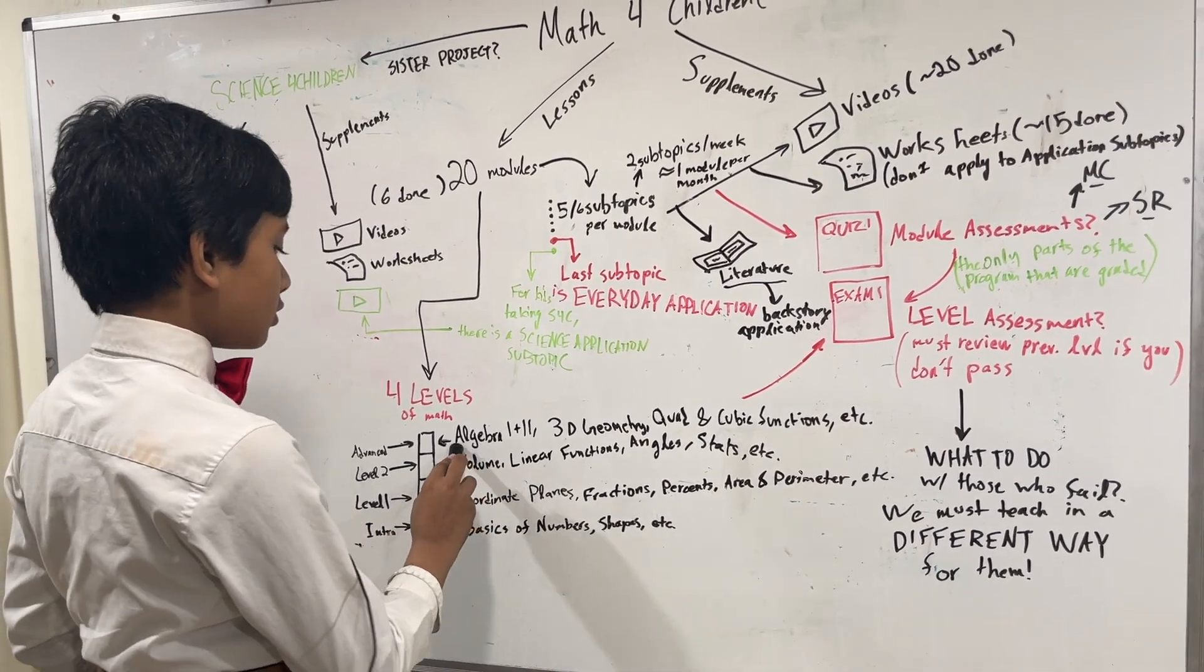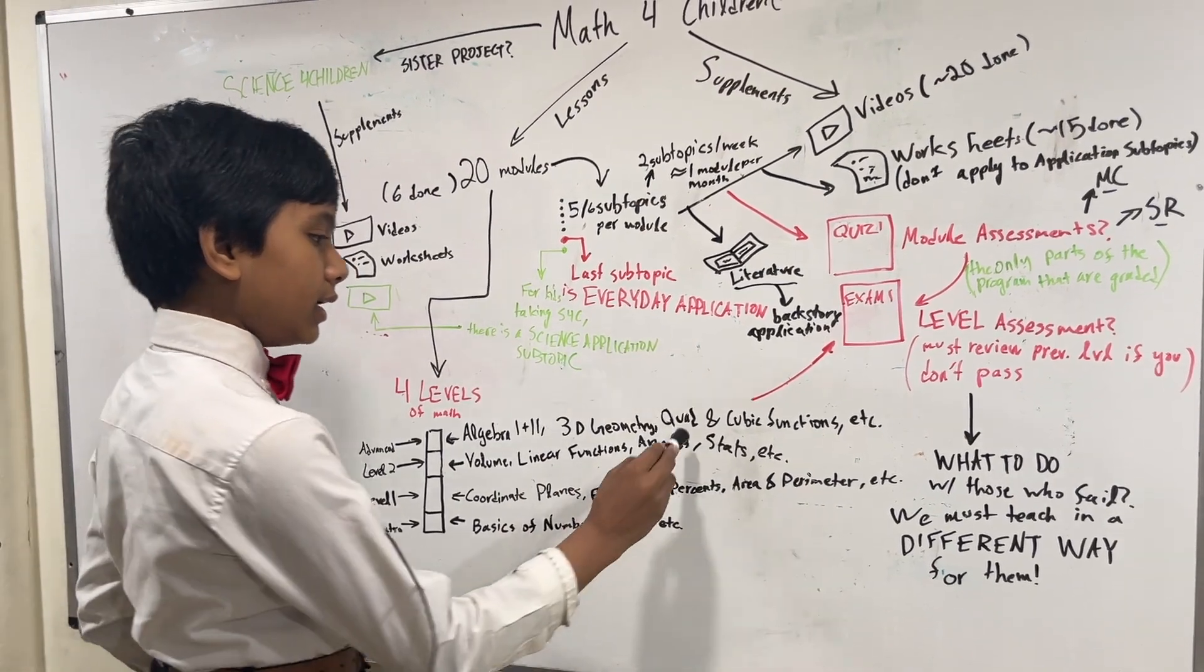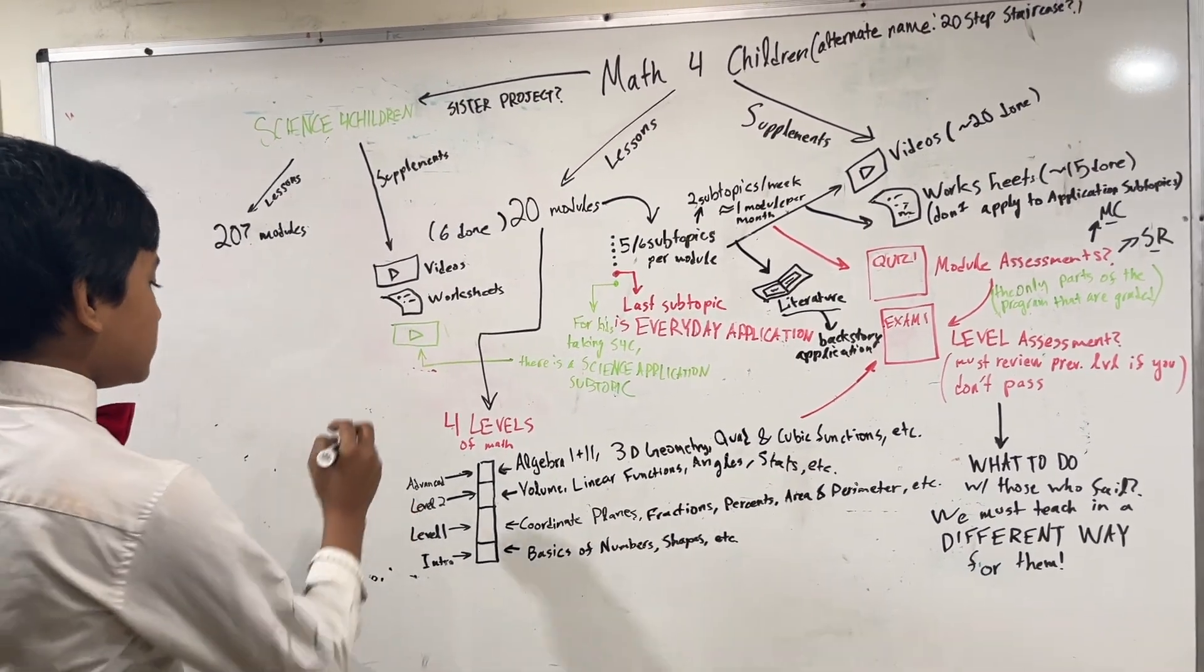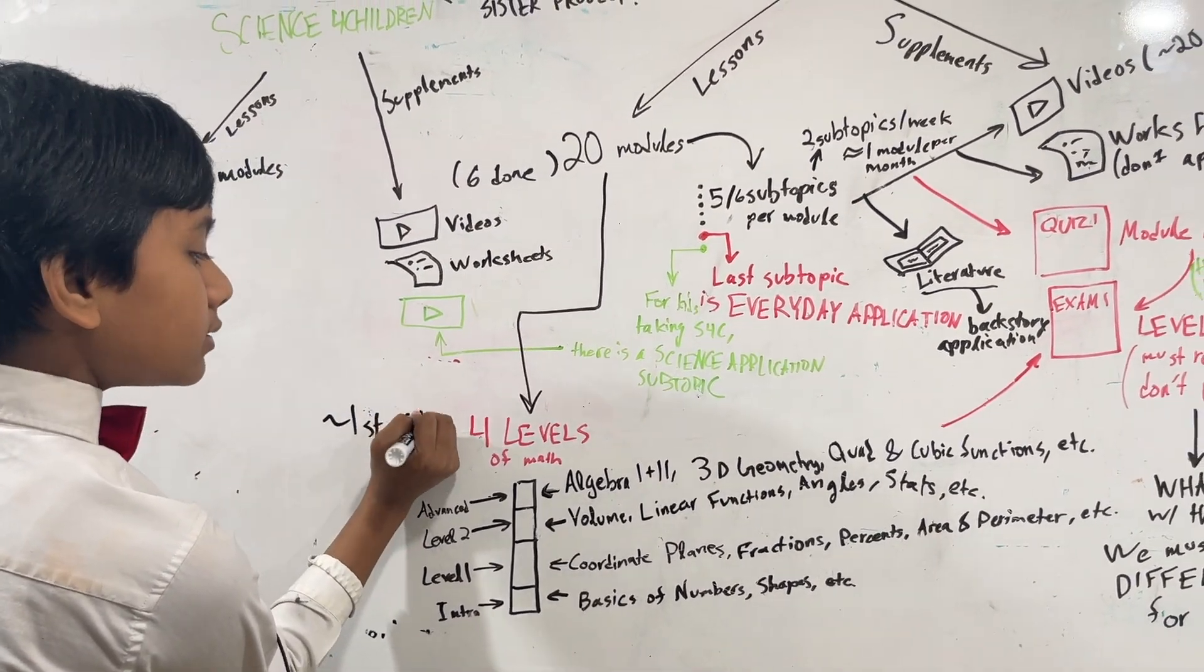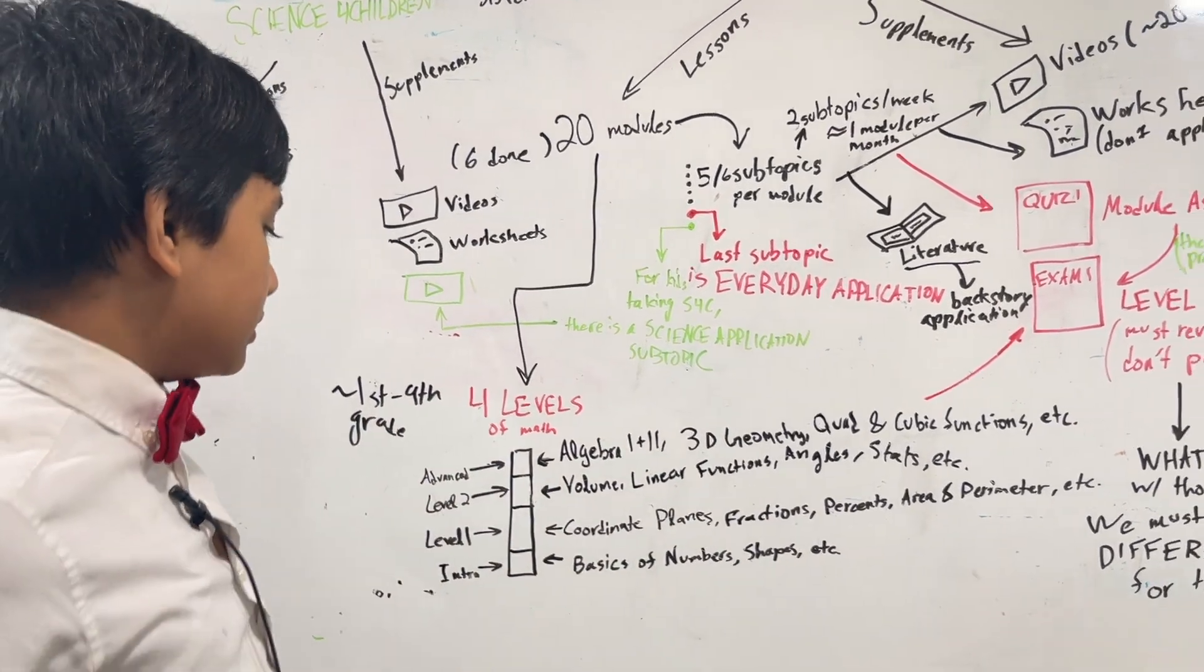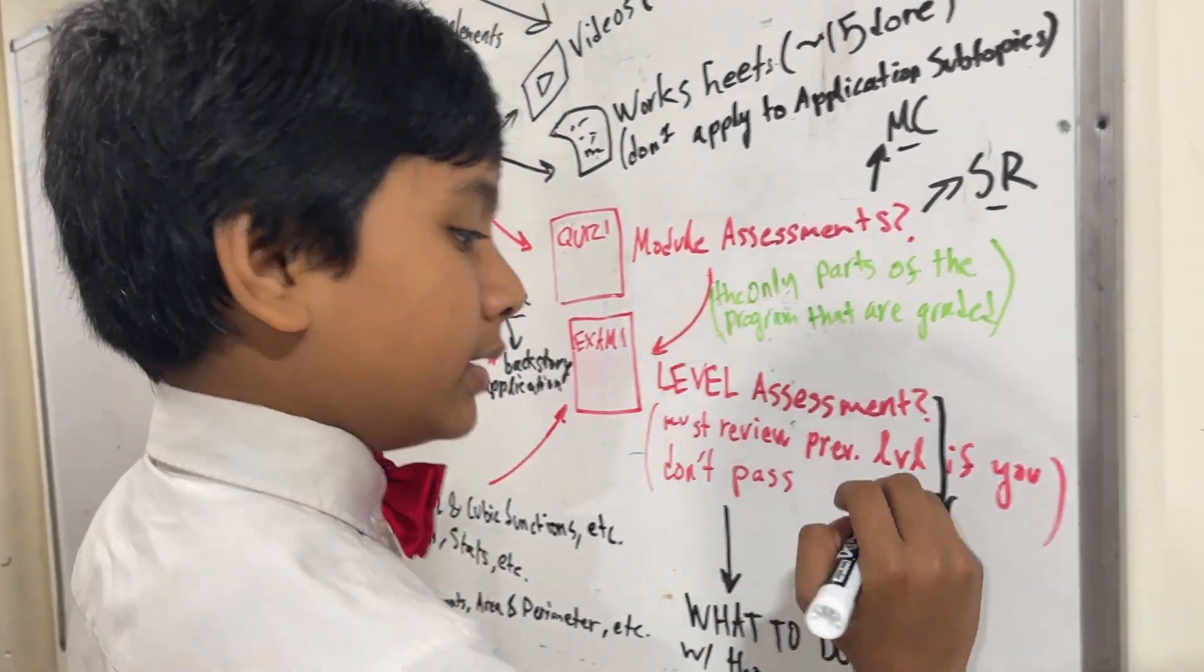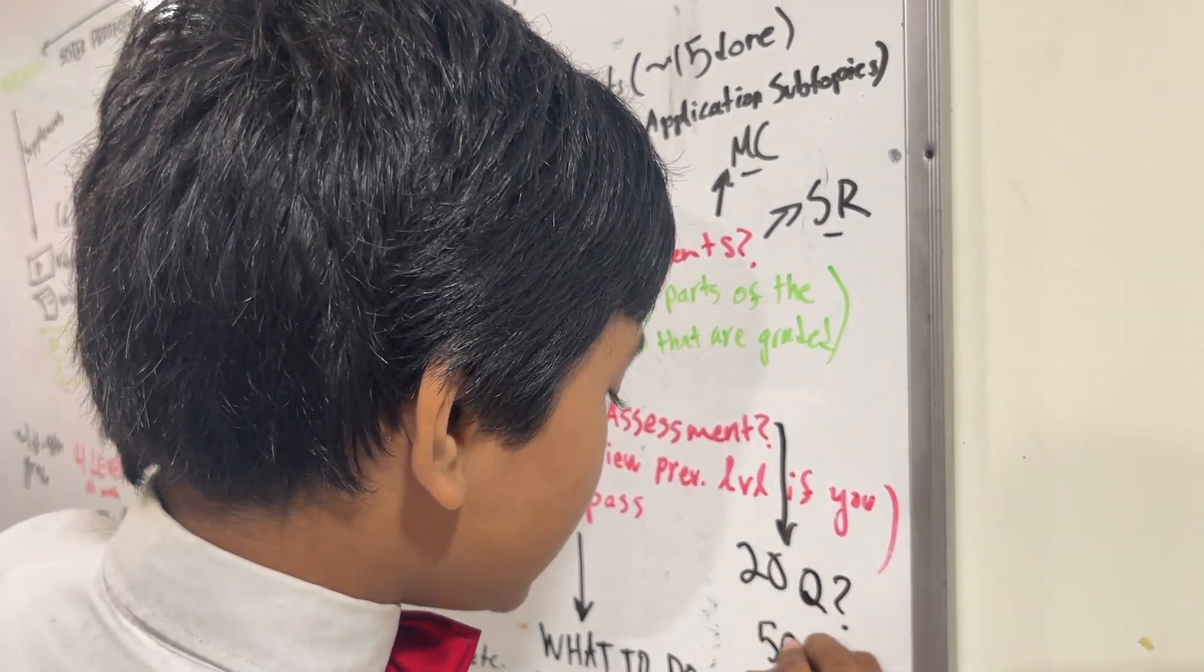And advanced, we're going to be doing algebra one, algebra two, more three-dimensional geometry, quadratic and cubic functions, etc. So those are the four basic levels of math ranging from about first to ninth grade. And after someone passes each level, there's going to be a much longer level assessment, which I don't know how long it's going to be, maybe 20 questions, maybe 50 questions, who knows.